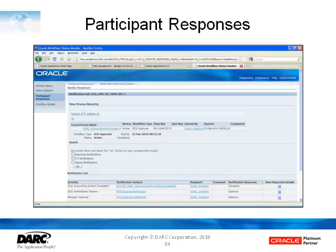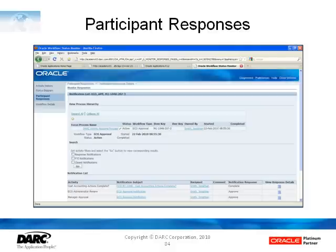The next link is the participant responses and if we look down there we can see that the manager approval notification went out to Jonathan Smith and he approved it. The ECO administrator review went out and it was approved, and then the cost accounting actions are complete. These unfortunately come out in alphabetical order, not in the order they're in the workflow, so we probably can't see the MEI actions which we know from the workflow have already taken place. They must be lower down on the screen.